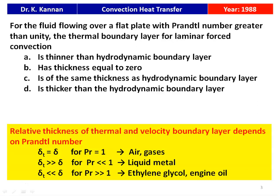The relative thickness of thermal and velocity boundary layers depends on the Prandtl number. For Prandtl number equal to 1, like air and gases, delta_t equals delta. For Prandtl number much lower than 1, like liquid metal, delta_t is greater than delta — the thermal boundary layer is thicker than the hydrodynamic. When Prandtl number is much greater than 1, like ethylene glycol or engine oil, the thermal boundary layer thickness is much lower than the hydrodynamic. Since the condition here is Prandtl number greater than unity, the answer is option A: the thermal boundary layer is thinner than the hydrodynamic boundary layer.